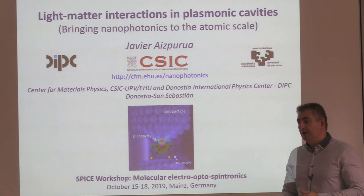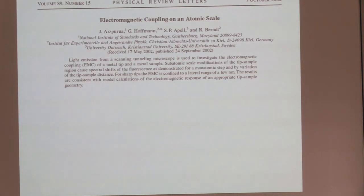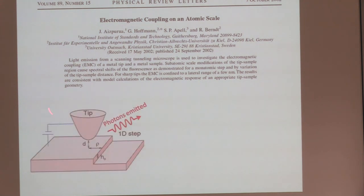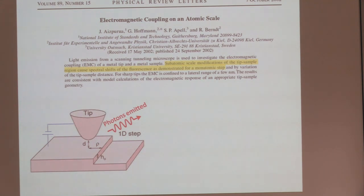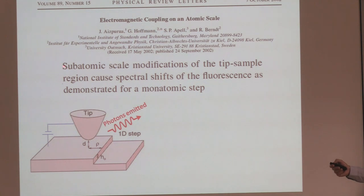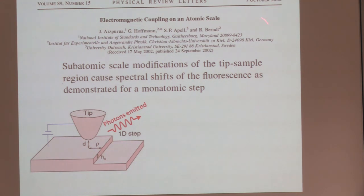Collecting papers for this tutorial, I found a PRL with Richard Berndt from when I was a postdoc at Chalmers in 2002. The title is amazing: 'Electromagnetic Coupling on an Atomic Scale.' Already at that time, Richard Berndt was operating an STM cavity with a bias of two or three electron volts, recording the photons emitted. When arriving at an atomic step, they recorded the emission and saw a jump in the spectrum — a jump of about two or three nanometers in wavelength. This showed that sub-atomic scale modifications cause spectral shifts of fluorescence, as demonstrated on a monatomic step.